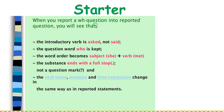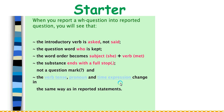When you report a WH question into a reported question, note that the introductory verb is 'asked,' not 'said' — we say 'she asked me,' not 'she said.' The question word, like where or which, is kept the same. The word order becomes subject plus verb. The sentence ends with a full stop, not a question mark. The verb tense, pronoun, and time expression change in the same way as in reported statements.